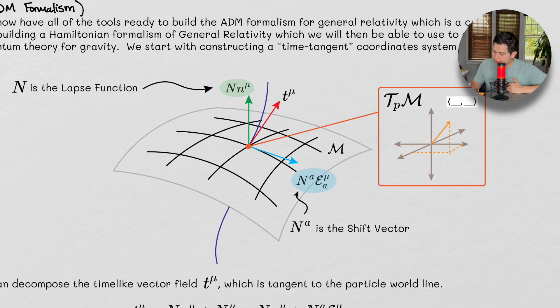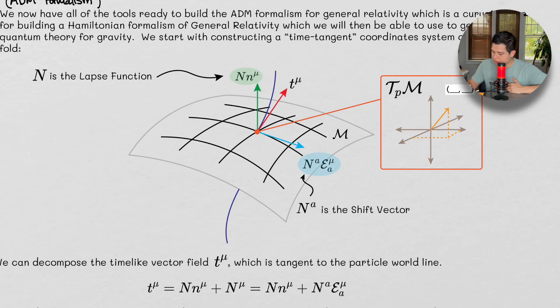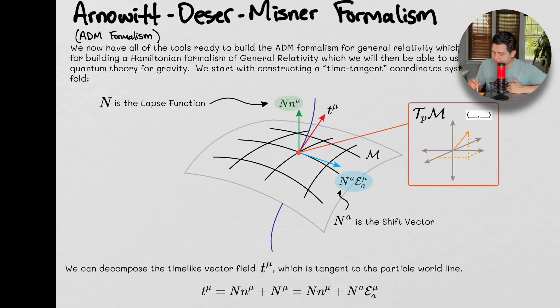And then we can also define a few other things. Alright, so we can define this n^a. This is a shift vector. And we can define this n, which is the lapse function.